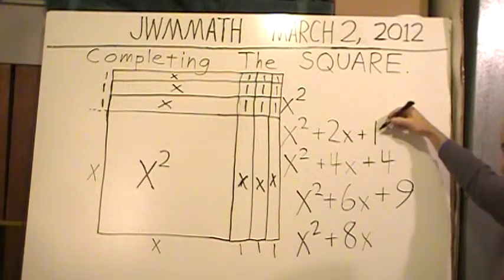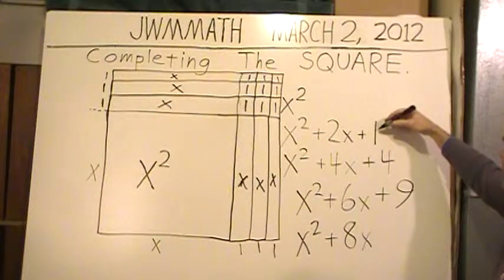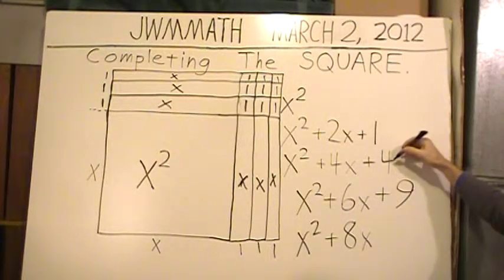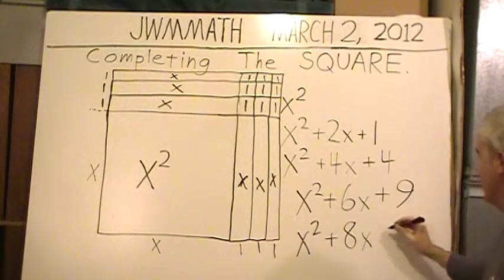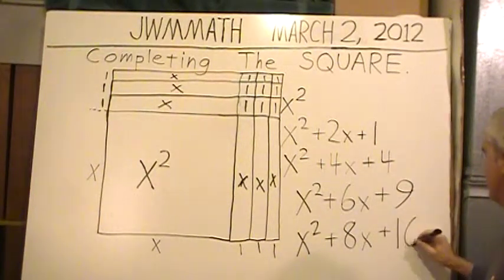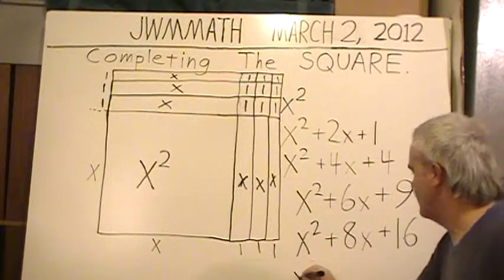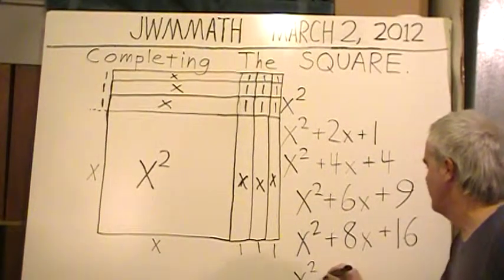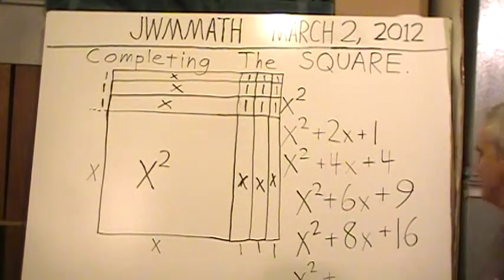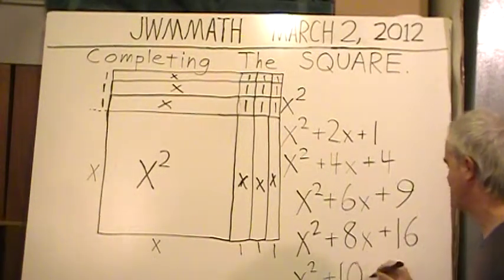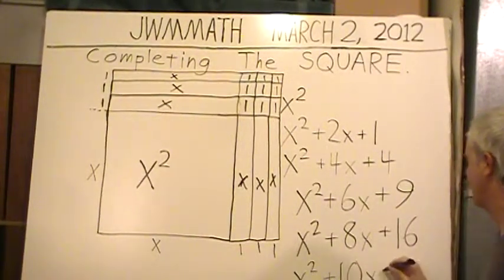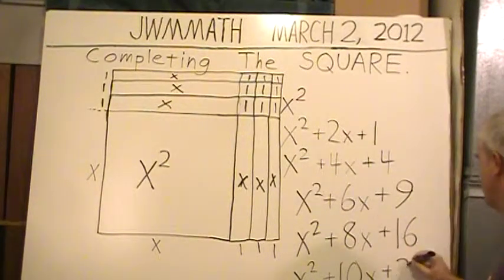How many little ones are there? Nine. So we have our original square of x squared. How many x's are there? Six. x squared plus 6x. And how many tiny squares do we now have in this great big completed square? Nine. x squared plus 6x plus 9.